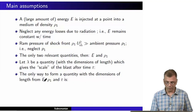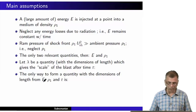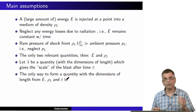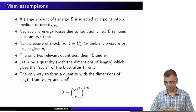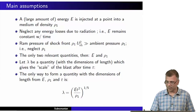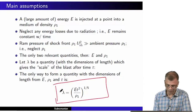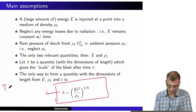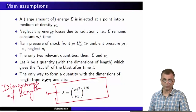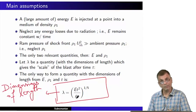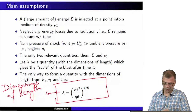What we need to do is play around with combinations of E, ρ₁, and t. Should it be E raised to some power times ρ₁ raised to another times t raised to whatever — what combination gives something with the dimensions of length? It turns out there is only one combination. This is the only way you can construct a quantity with dimensions of length from energy, density, and time.